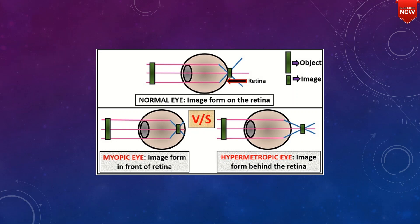Comparing normal vision, myopia, and hypermetropia: in a normal eye, the image is formed on the retina. In a myopic eye, the image is formed in front of the retina. In a hypermetropic eye, the image is formed behind the retina.